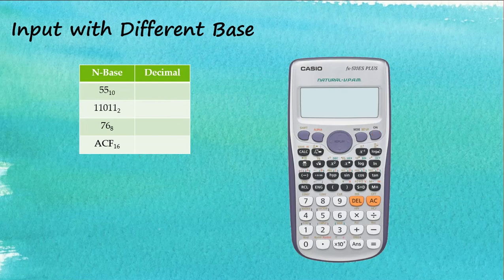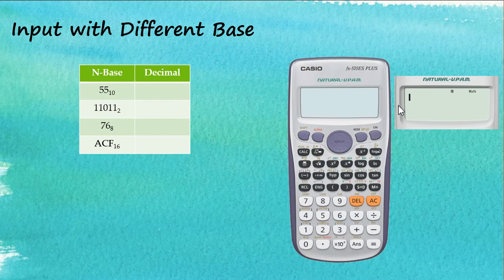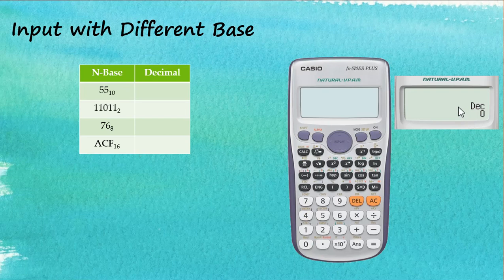Let me switch on the calculator. To perform calculations with different bases, we need to go to the mode and then choose 4. Straight away, this screen pops up. We can see that now the base is decimal, and that's what we want, because we would like the answer to be displayed in decimal.